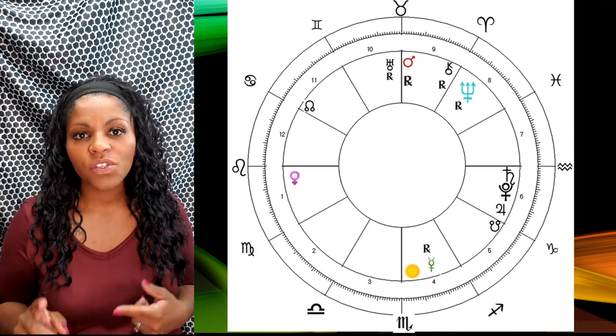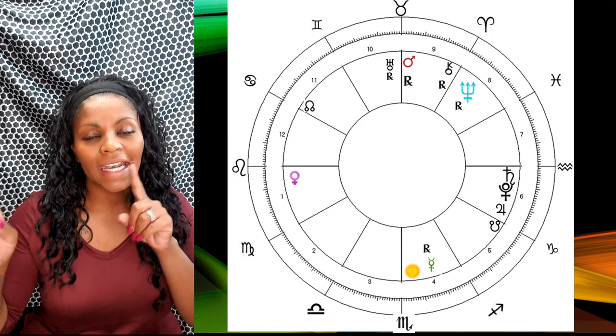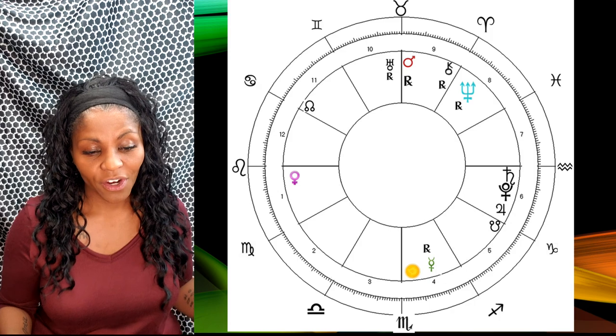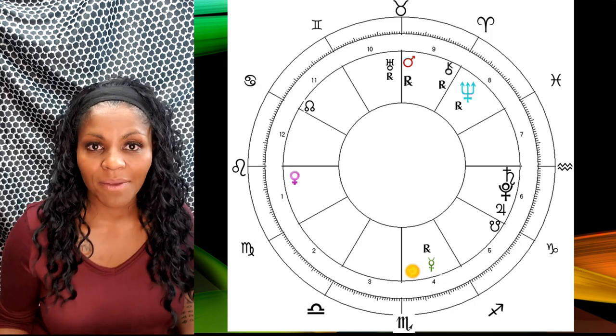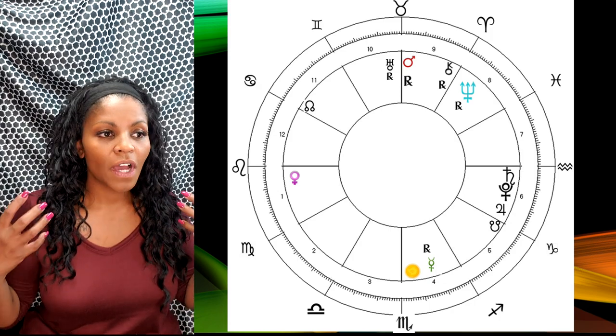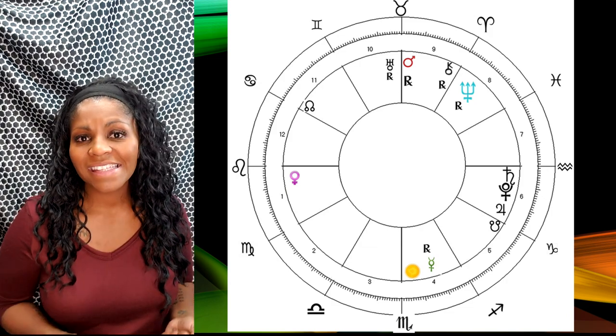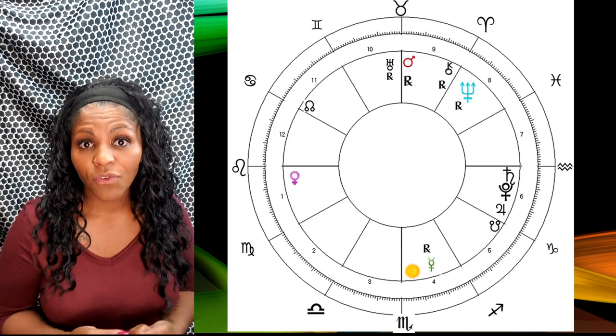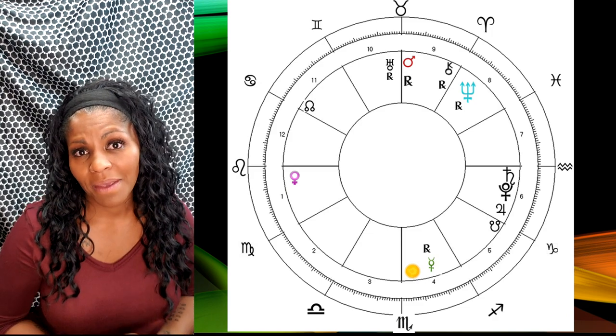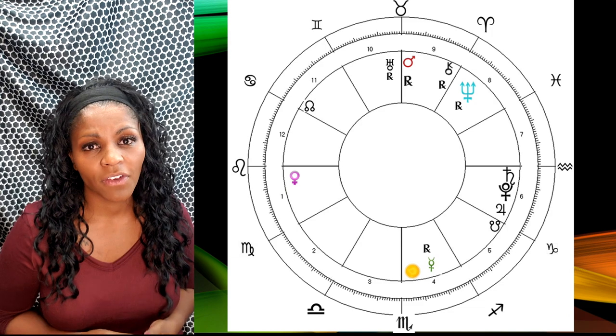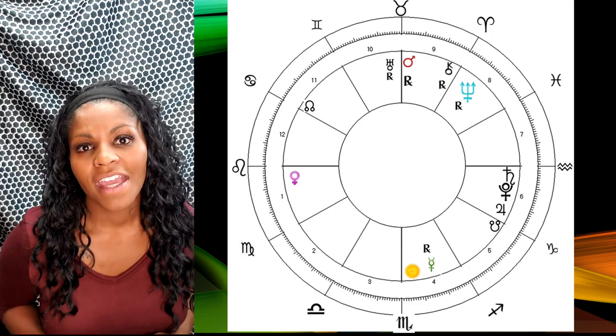On the 24th, Venus is going to trine Saturn and I like this energy. This is a great day to make a commitment. If you've got a commitment or something that you want to make official, this is a great energy for that because a long-term commitment made this day has long lasting effects and is usually very positive. So the 24th is your day my friends.